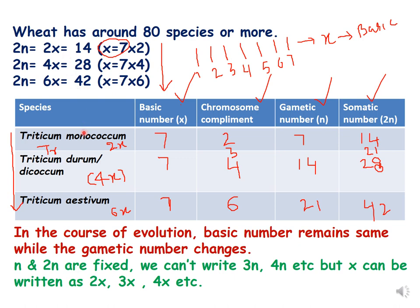The first species is Triticum monococcum, which has basic number 7, chromosome complement 2 (two sets), gametic number 7, and somatic number 14. The second species, Triticum durum, has the same basic number but the chromosome complement has changed — the seven chromosomes are present in four copies, so it is 4x and the somatic number becomes 28. The third species has seven chromosomes present in six sets, becoming 42 (7 × 6 = 42), making it Triticum aestivum. In the course of evolution the basic number remains 7 while the gametic number changes.